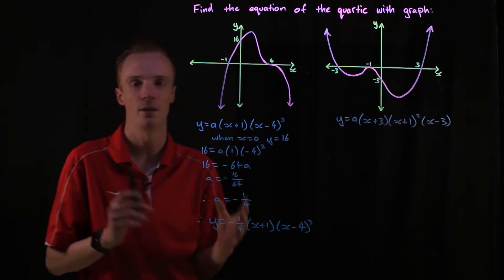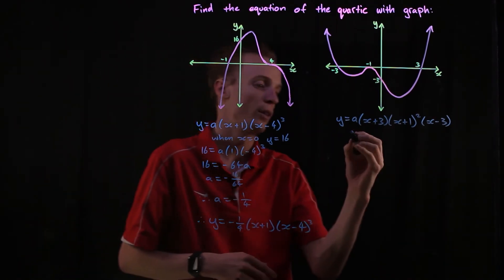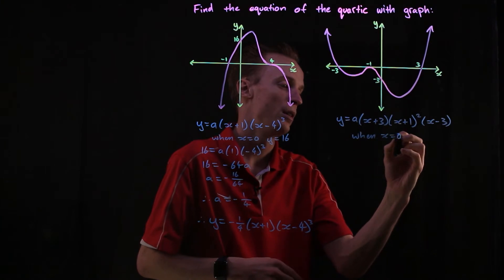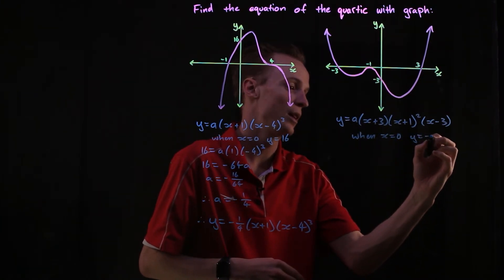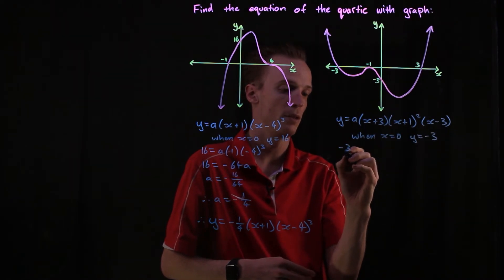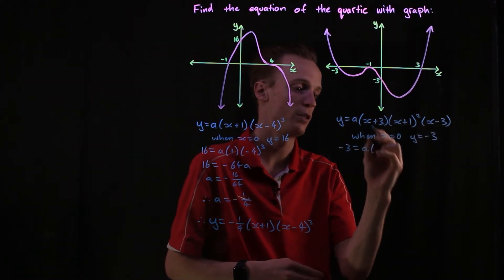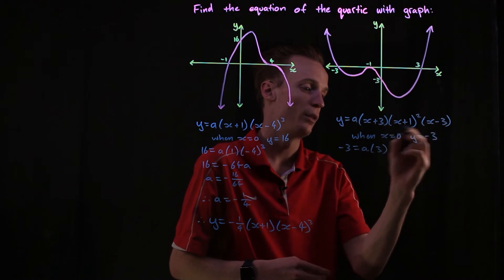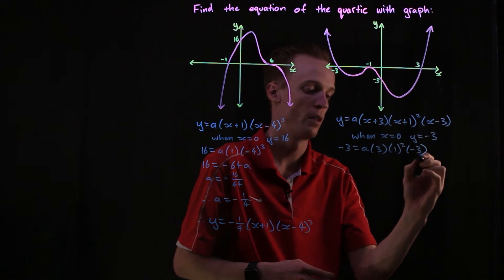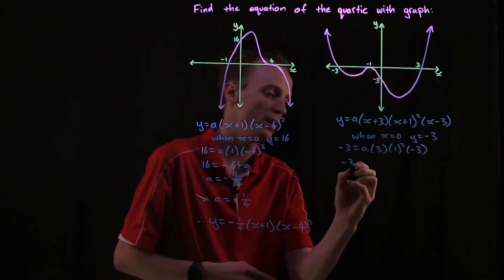The point that I'm going to substitute is the y-intercept because that's what's given to us. When my x is equal to zero, my y is equal to negative three. So my y of negative three should equal a times (zero plus three is three) times (zero plus one is one) times (zero take three is negative three).